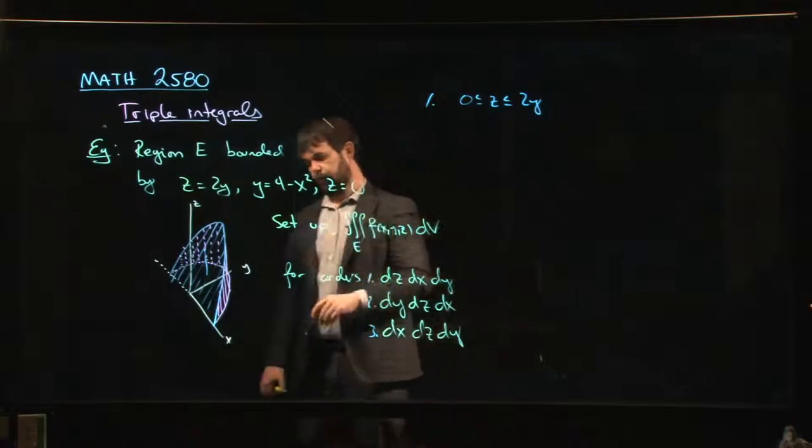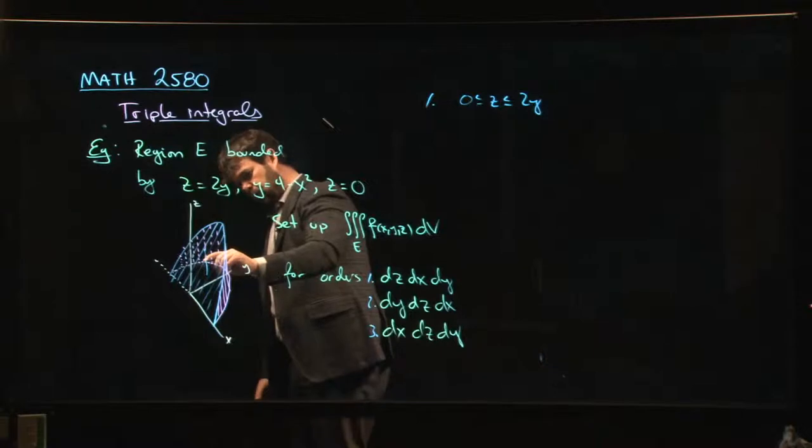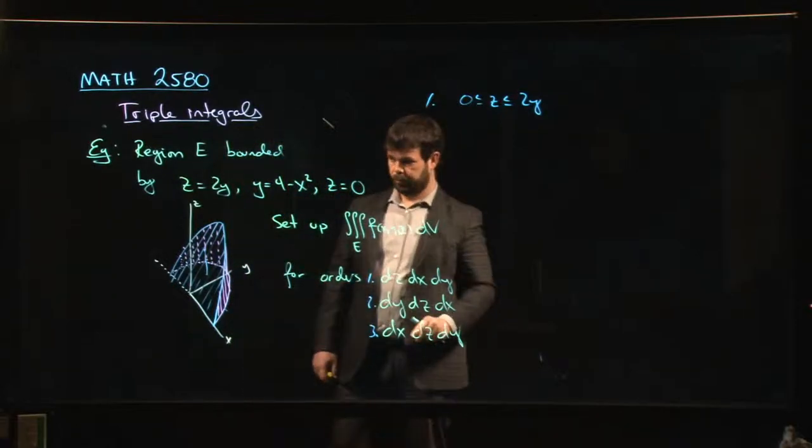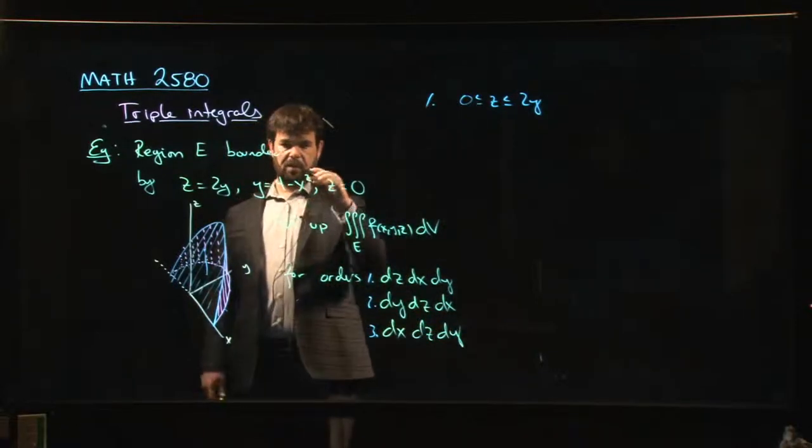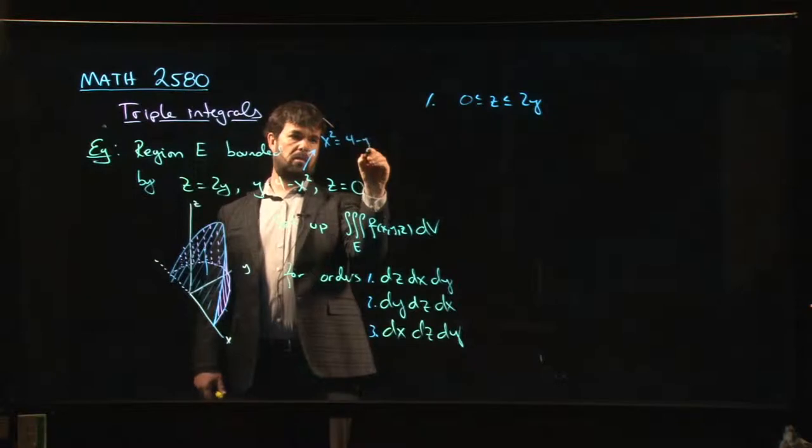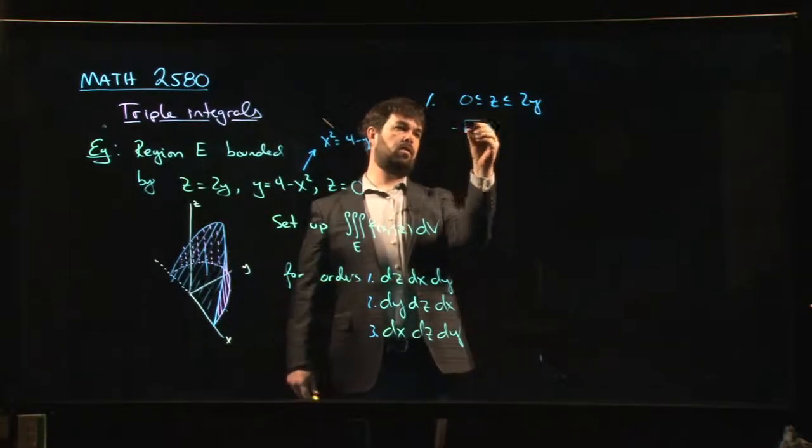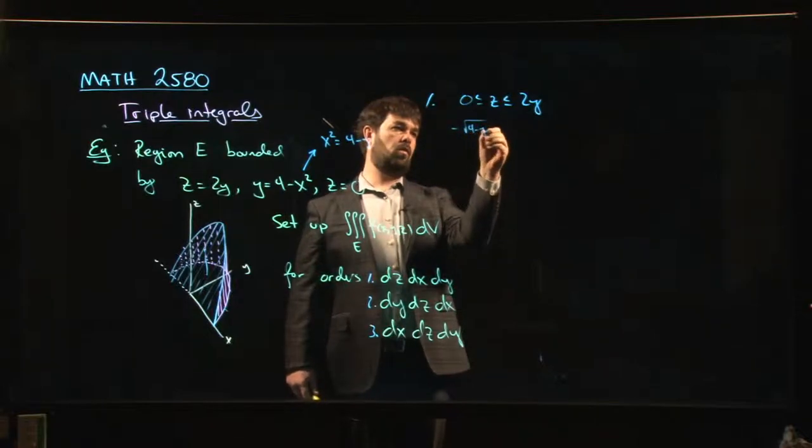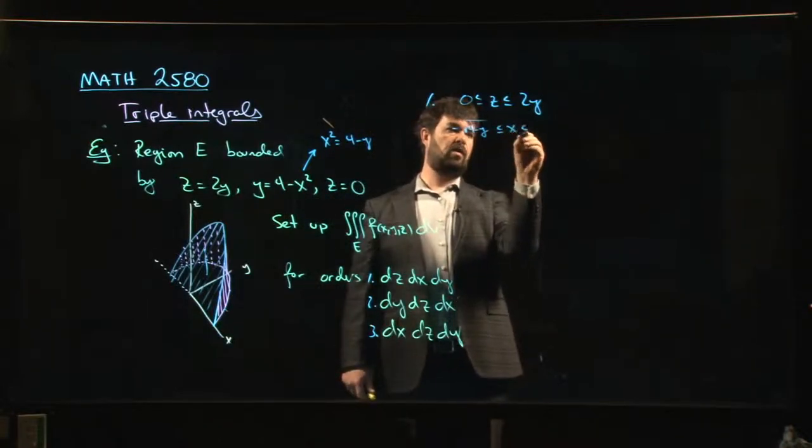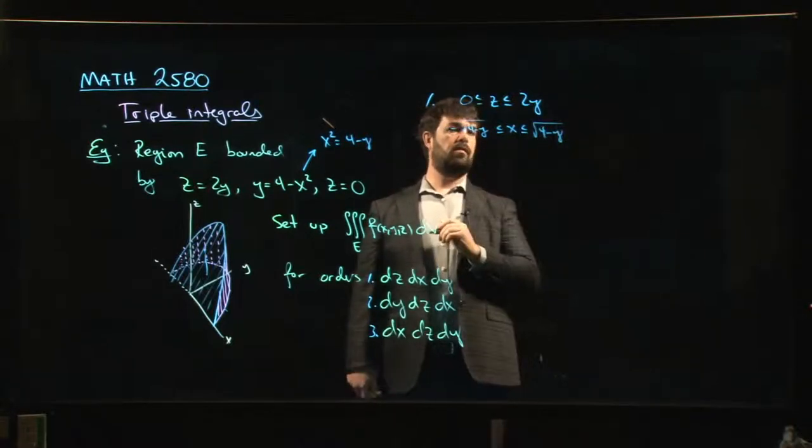Next, we want to do x. Well, x starts on this half of the parabola, or really starts on that half, ends on that half. So x starts here and ends there. So I guess I'd have to solve here for x. I'd have to say, okay, so x would be, what, x squared would be 4 minus y. So we've got a positive and a negative square root. So we'd say minus root 4 minus y, less than or equal to x, less than or equal to square root 4 minus y.